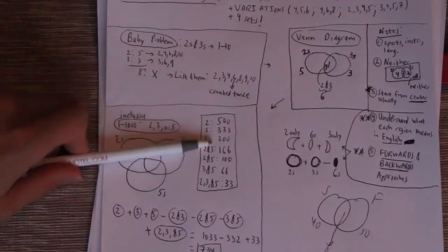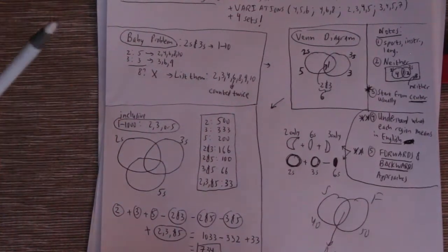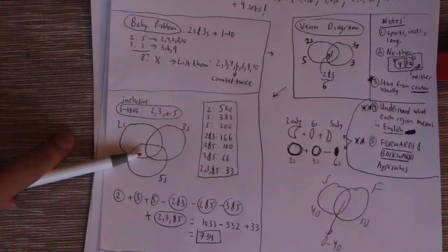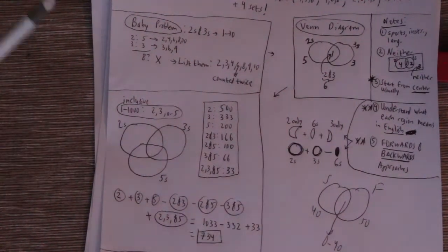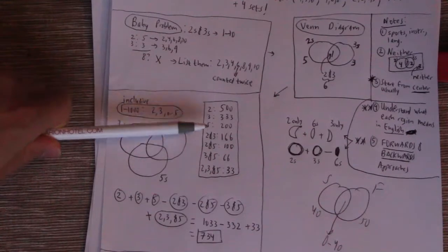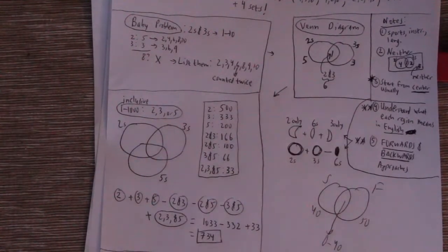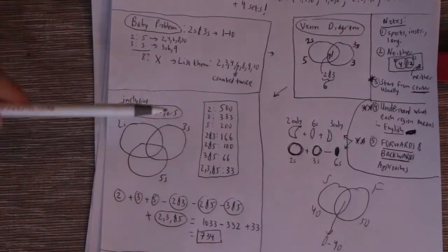So now the question is, what do we do with all these numbers? That's really the tricky part. And that's where this Venn diagram will be super duper helpful. So our first idea might be, well, let's just add the twos, threes, and fives. And that's like adding these three circles. But as you guys can tell, that will create overlap.